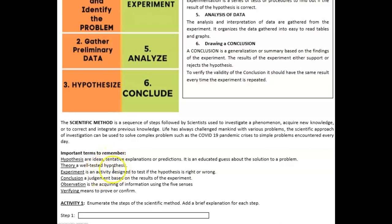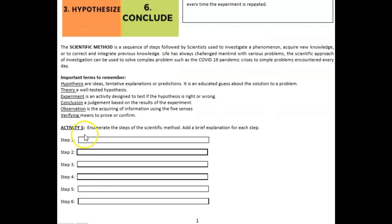After you read all those concepts, you may proceed to Activity 1: Enumerate the steps of the scientific method. Add a brief explanation for each step - one, two, three, four, five, six. After you write the six steps, all you have to do is to write a brief explanation about it based on what you understood.